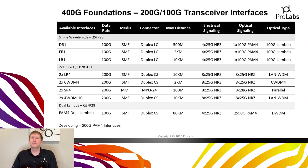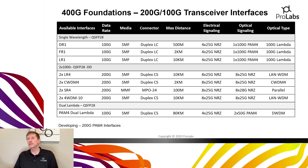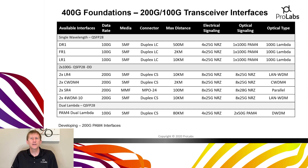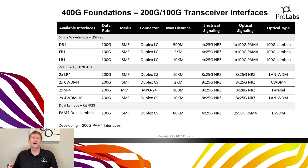Moving on to 2x100 gig QSFP28DD transceivers — these are NRZ on both the electrical and optical sides, as shown by the specs on the slide. And the final transceiver on the slide is a dual-lambda QSFP28 PAM4 transceiver — PAM4 dual lambda, meaning 2x50 gig DWDM on the same fiber, used in a QSFP28-type environment.